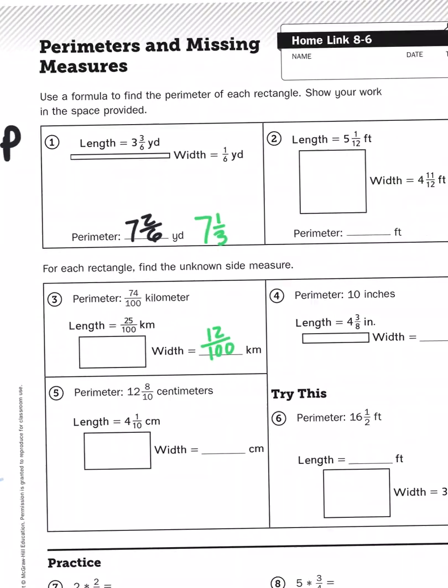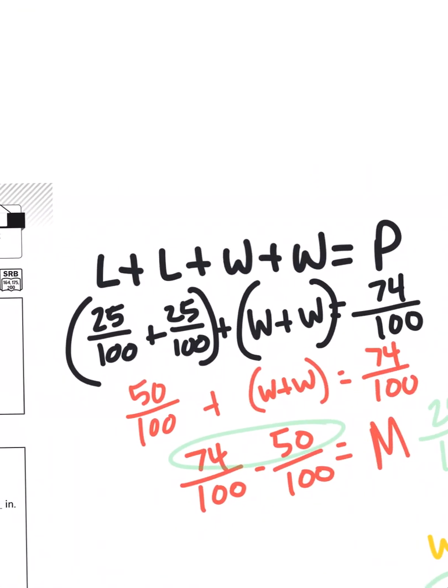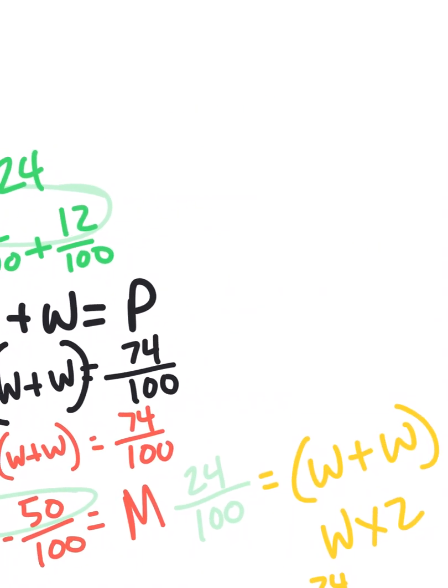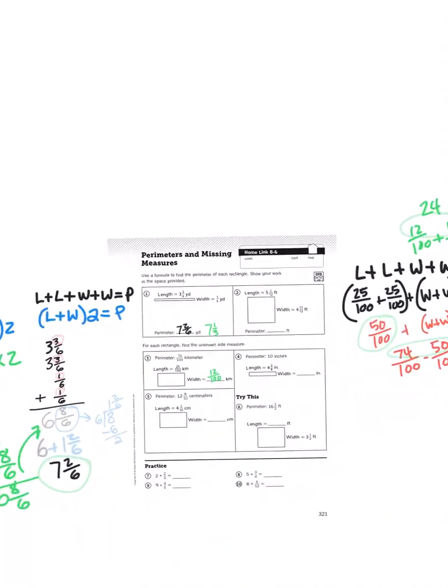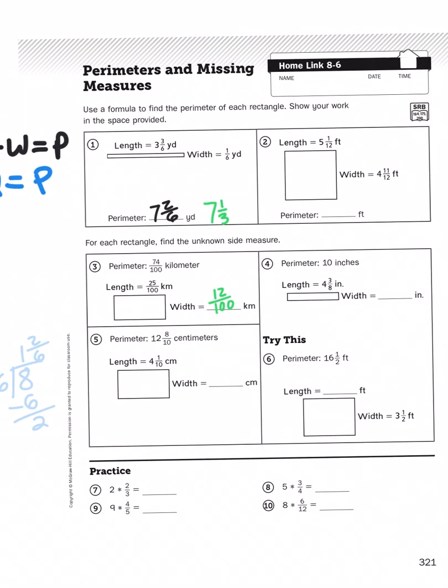Now if I'm still not sure if that answer is correct, I can just take it over here and plug it in to my addition problem. 25 plus 25 plus 12 plus 12. Well, we determined that 25 plus 25 is 50. 12 plus 12 is going to give us 24. And if I add 50 plus 24, you guessed it, it gives us 74.